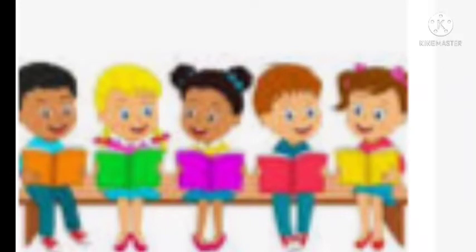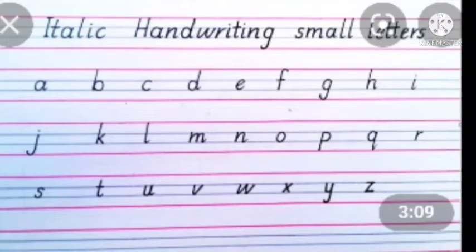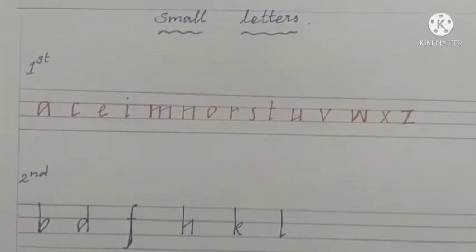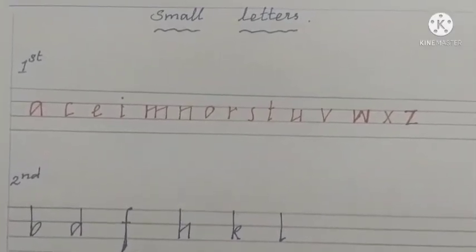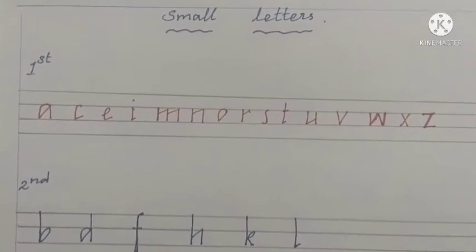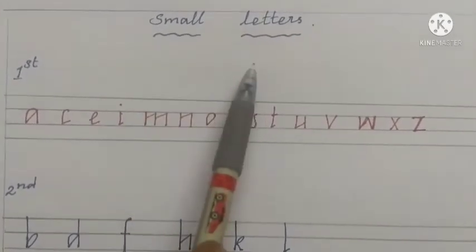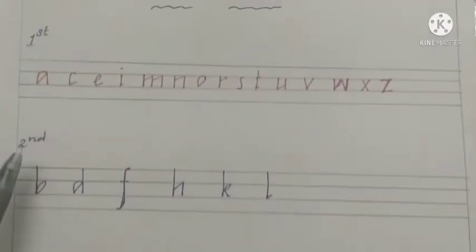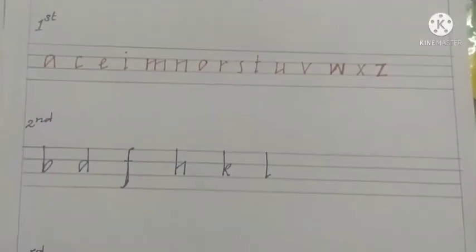Children, today we are going to study how to write small letters. Dear parents and students, we follow italic form of writing in our school. Please practice it daily and better your handwriting. In English, we have 26 letters. We divide the small letters into three zones: first zone, second zone, third zone.